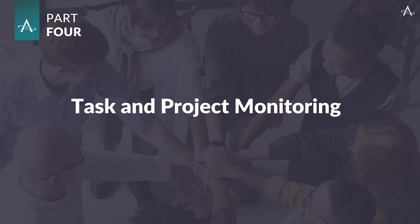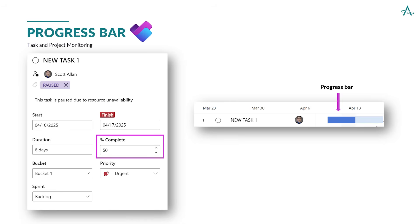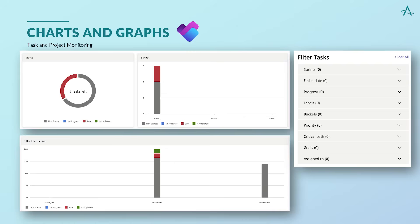Task management isn't just about assigning work — it's about knowing where things stand. Planner Premium gives you progress bars, charts, and graphs to spot what's moving, what's stuck, and where your focus is needed. It's how project managers stay proactive instead of reactive. Progress is tracked by adjusting the percent complete field in the task card. As this value is updated, the blue progress bar in the timeline view fills to visually represent how much work has been completed. Charts and graphs give teams a clear snapshot of task distribution, progress, and priorities. The built-in reports provide project managers with a quick look at overall status, workload by person, and progress by bucket. Applying filters helps hone these visuals, letting you zero in on specific sprints, priorities, labels, or assigned users.